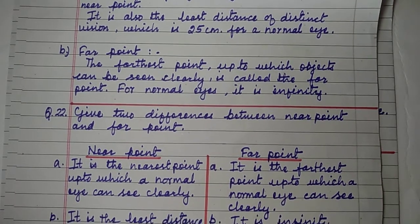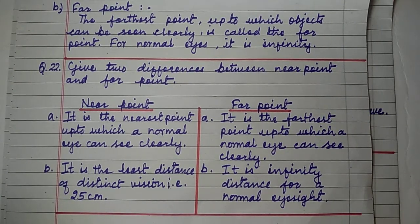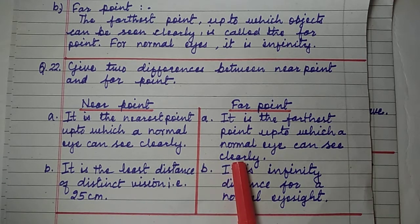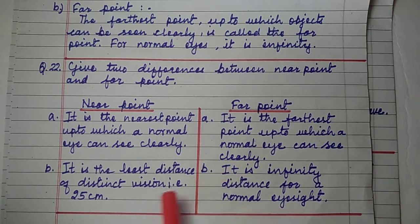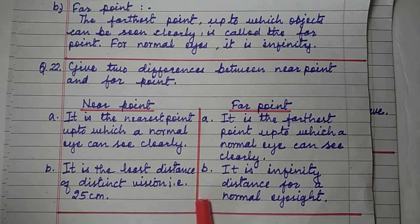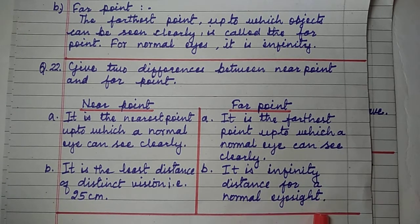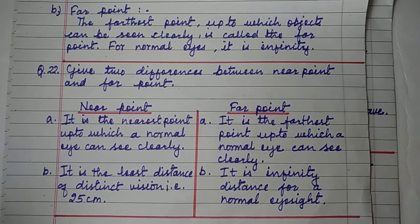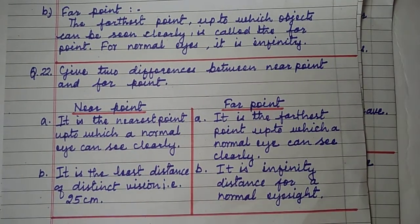Give two differences between near point and far point. Near point is the nearest point up to which a normal eye can see clearly, whereas far point is the farthest point. Near point is the least distance of distinct vision — 25 centimeters — whereas far point is infinity distance for a normal eyesight. With this we finish Part 1 of the revision and will cover the remaining part in the next video.